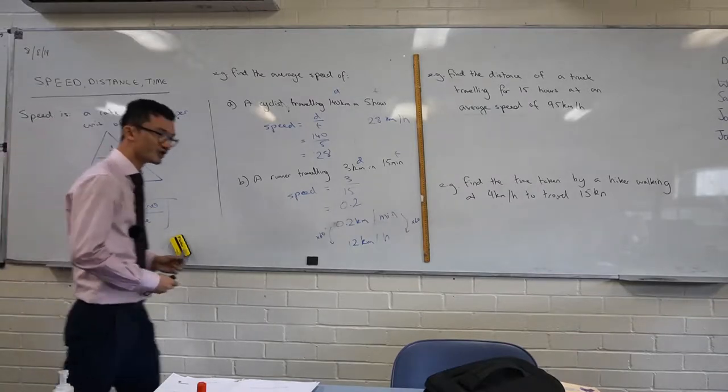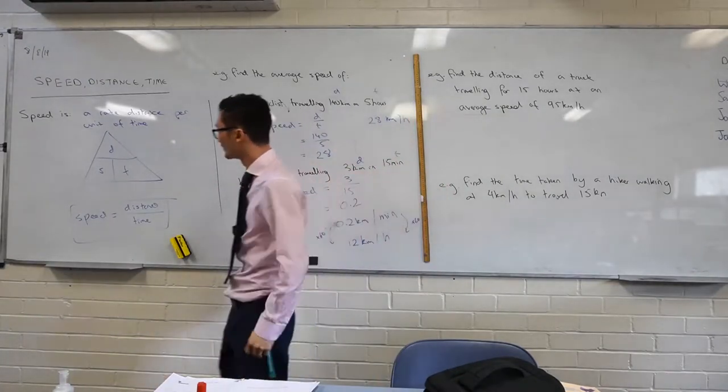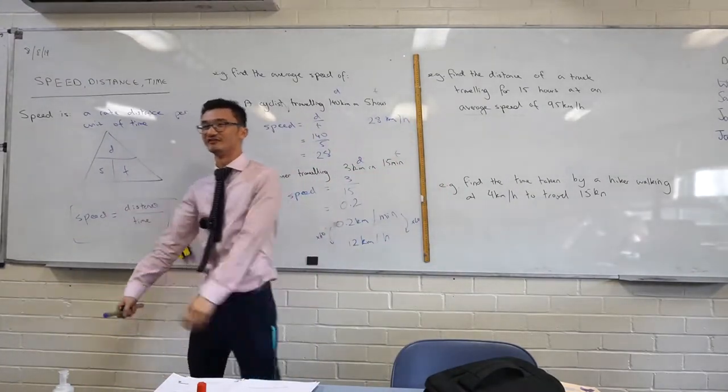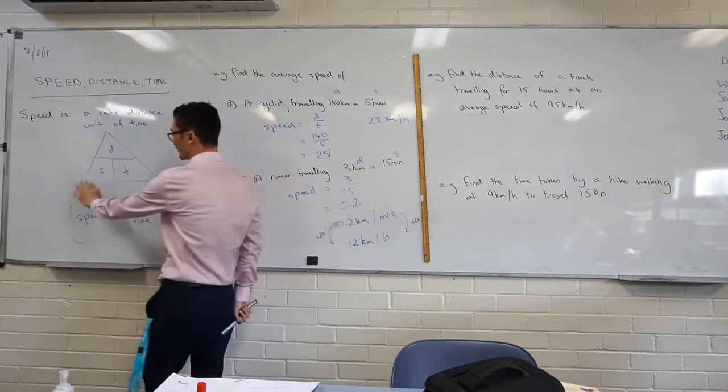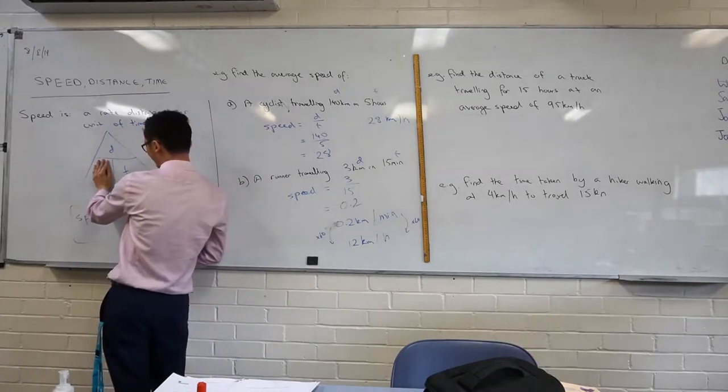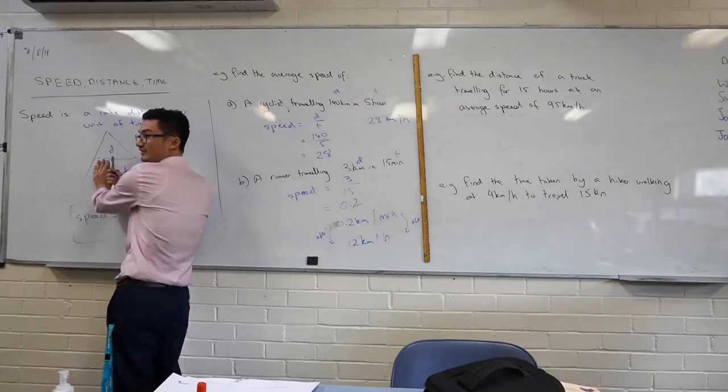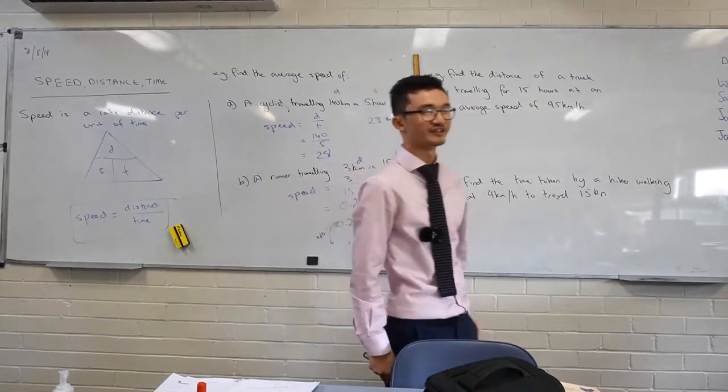This triangle helps you determine the relationships between speed, distance, and time. If you want to find one of these variables, so if you just want to find speed, all you have to do is you draw this triangle, and you cover up the rest. And what do you notice about d and t? Well, it looks like a little fraction almost. It's like distance divided by time.